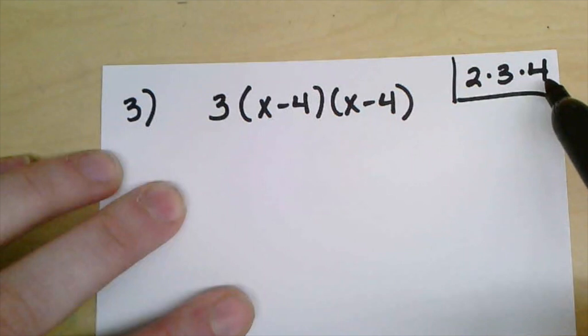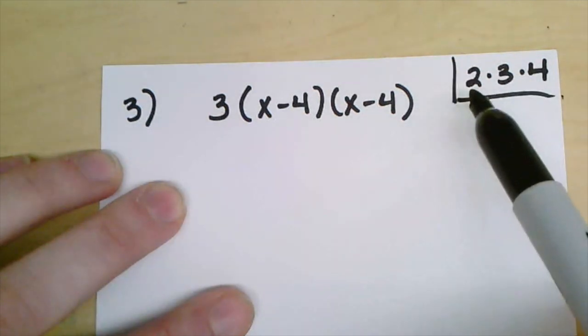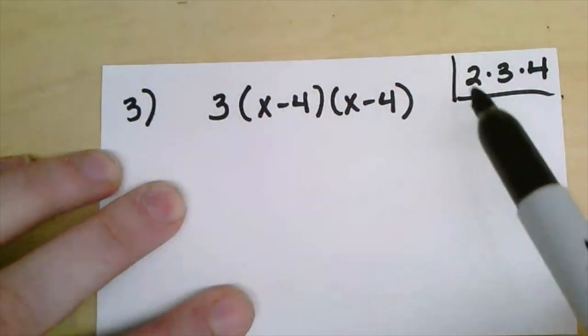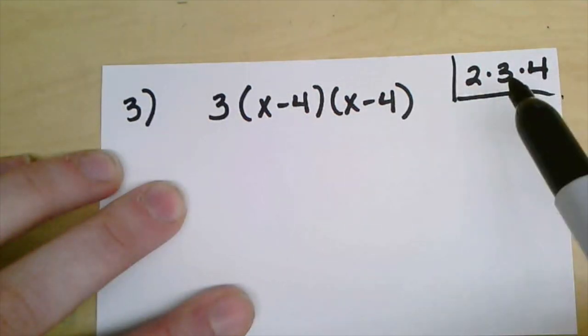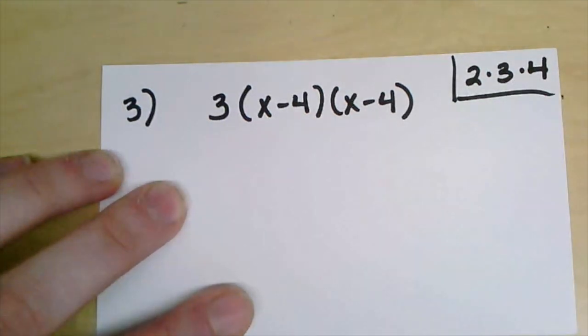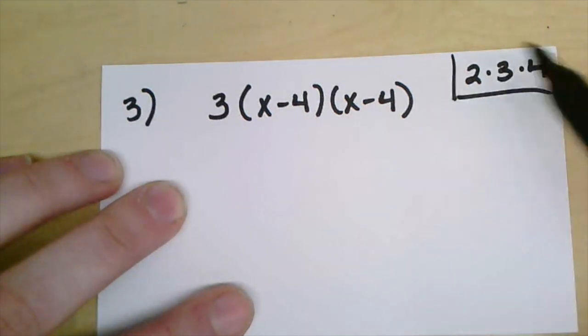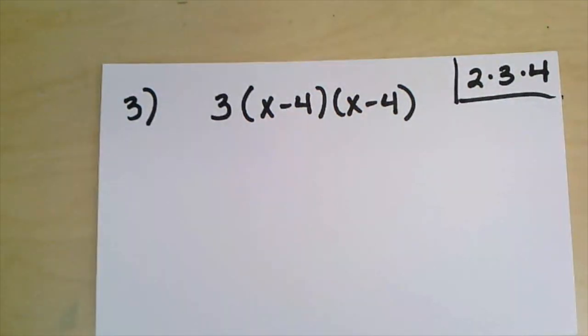2 times 3 is 6 times 4 is 24. Well if I take 3 times 4 I get 12, if I multiply that by 2 I still get 24. And even if I do 2 times 4 first I get 8, and I multiply by 3 I'm still going to get 24. So it appears it does not matter what order we multiply in, as long as we multiply everything correctly.